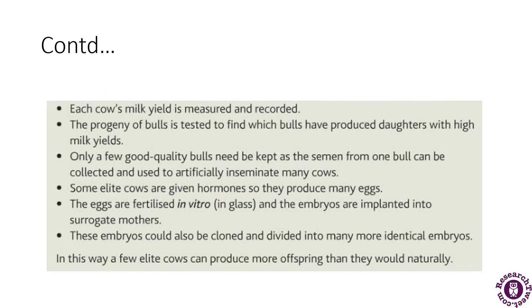Each cow's milk is measured and reported. The progeny of bulls is also tested to find which bull has produced daughters with high milk yields. Only a few good quality bulls need to be kept, as semen from one bull can be used to artificially inseminate many cows. Elite cows are given hormones to produce many eggs, which are fertilized in vitro, and the embryos are implanted into surrogate mothers, then cloned and divided into many more identical embryos, allowing elite cows to produce more offspring than they would naturally.